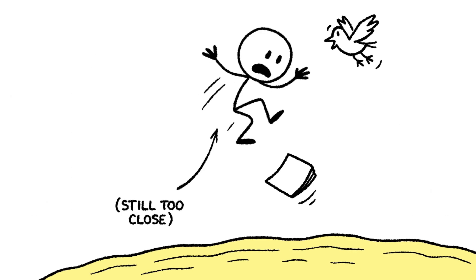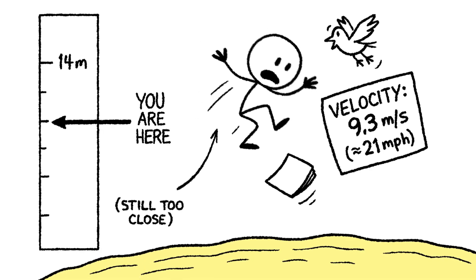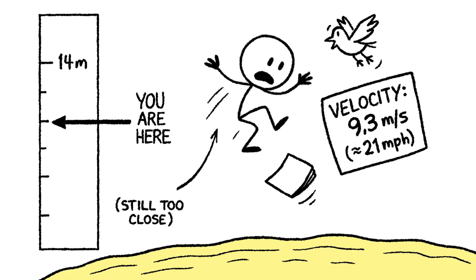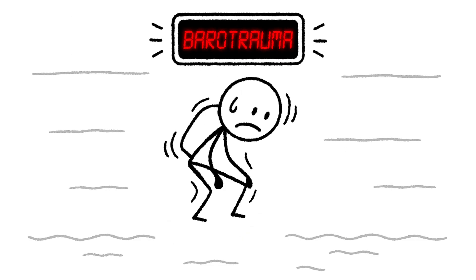T plus three seconds. The fall accelerates. You've plunged over 14 meters. Your velocity hits 9.3 meters per second. That's about 21 miles per hour. More critically, this atmosphere plunge triggers lethal barotrauma.